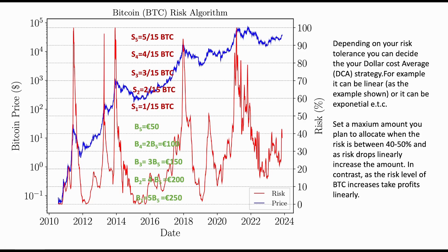In contrast, when the risk is between 50 to 100 percent, a dynamic way to exit the market is the following. Imagine you own one bitcoin and as the risk increases you want to exit using the risk metric. Your BTC is split into fractions: when the risk is between 50 to 60 percent you offload 1/15 of your bitcoin. When it moves to 60 to 70 percent you increase that amount by a factor of two, and so on. Using this dynamic way, 9/15 of your BTC was offloaded when the risk was between 80 to 100 percent.